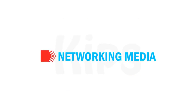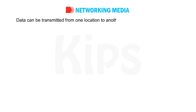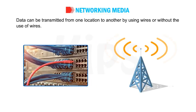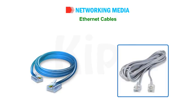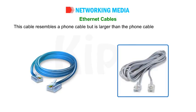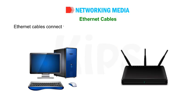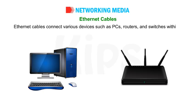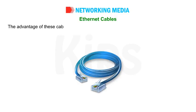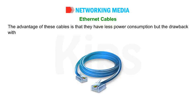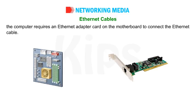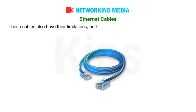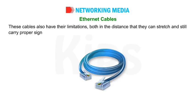Data can be transmitted from one location to another by using wires or without the use of wires. Wired Networking Technology — Ethernet Cables: An Ethernet cable is one of the most popular forms of network cable used in wired networks. This cable resembles a phone cable but is larger and has 8 wires. Ethernet cables connect various devices such as PCs, routers and switches within a local area network. The advantage is that they have less power consumption, but the drawback is that the computer requires an Ethernet adapter card on the motherboard. These cables also have limitations in the distance they can stretch and their durability.